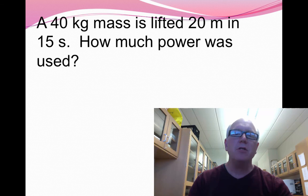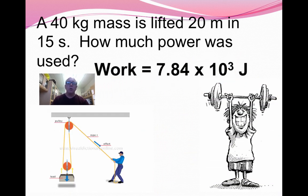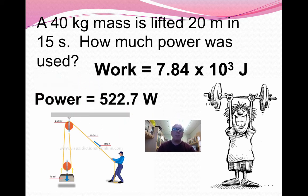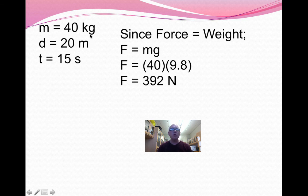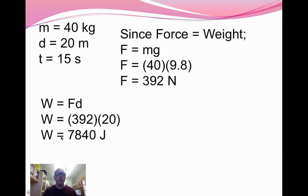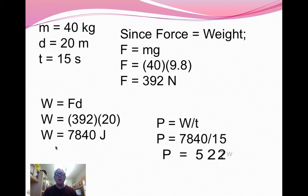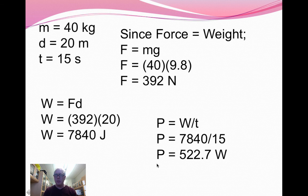Welcome back. See how you did. My answer was 7,840 joules and the power, 522.7 watts. Here's my explanation of how it works. There's my mass. I'm first identifying my information. I have to realize that mass is not force. So here I am making the conversion to weight. The force is 392 newtons. That's where I got the 7,840 joules. So there's my work. There is my power, taking the work and dividing it by the time. I hope that made some sense to you. If you didn't understand what was going on, please bring your questions back to class. I look forward to seeing you there. Thanks for watching.